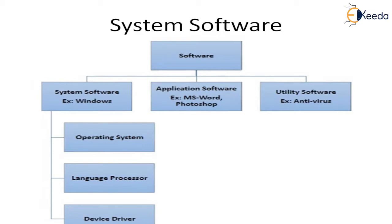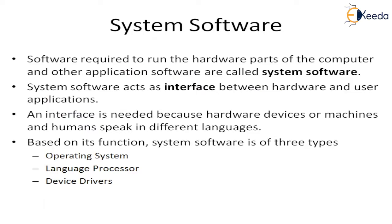Under system software, there are three categories: operating system, language processor, and device driver. System software is required to run the hardware part of the computer. It is a type of computer program designed to run computer hardware and applications — it serves as the interface between the hardware and user applications. Based on its function, system software is divided into three types: operating system, language processor, and device driver.